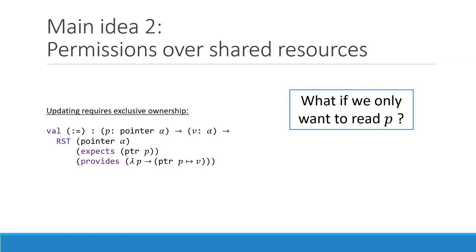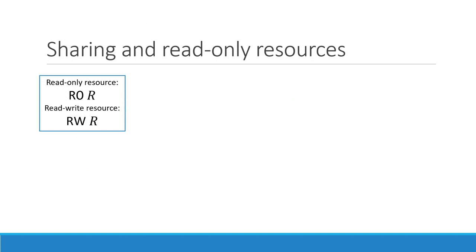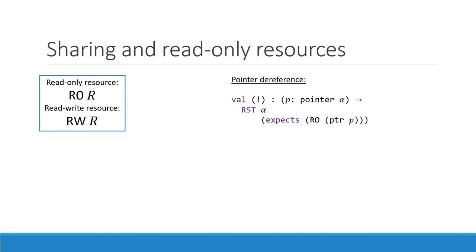But what if we only wanted to read P? Then we have a read-only P in our context, and the type checker should disallow update mechanisms. We can actually do that — it's a classic extension to separation logic. We can define read-only resources and read-write resources. For instance, our pointer dereference specification — which takes a pointer and returns the value inside — just expects a read-only resource and provides the read-only resource pointing to V. Here we know that because it's read-only, the contents haven't been modified.